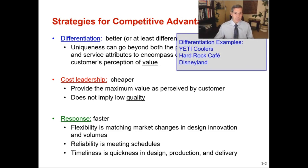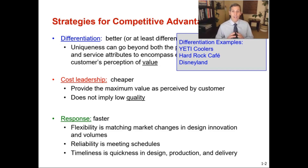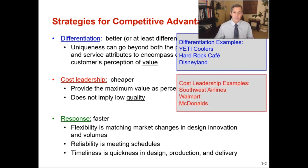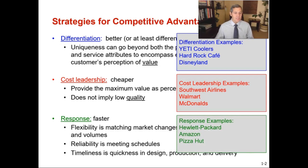Some quick examples: for differentiation — Yeti Coolers, Hard Rock Cafe, Disneyland — companies like Apple or Yeti that have unique or high quality products and can provide an experience better than other products or services. Examples of cost leadership would be Southwest Airlines, Walmart, or McDonald's. And examples of response time would be Hewlett Packard, Amazon, and Pizza Hut.